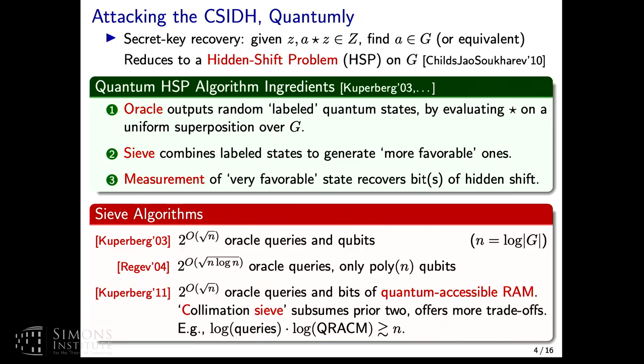If you look a bit closer, Kuperberg actually points this out in his paper that this third algorithm here actually subsumes the prior two. The other two come out as instantiations of it. It also offers more trade-offs among the parameters. One trade-off that will really squeeze a lot of juice out of is this trade-off, which is that you can essentially, as long as this equation holds, so as long as the log of your number of queries times the log of your amount of QRACM is roughly exceeding N, then the sieve will work.